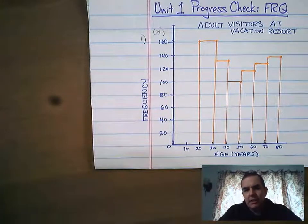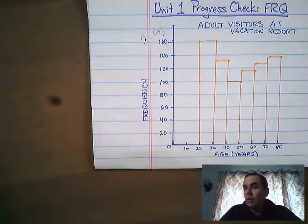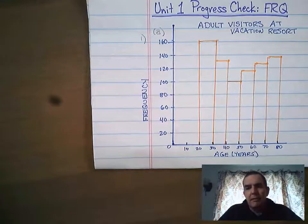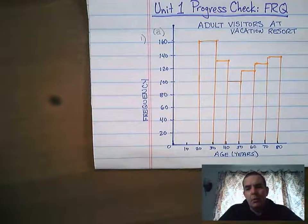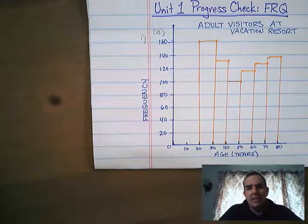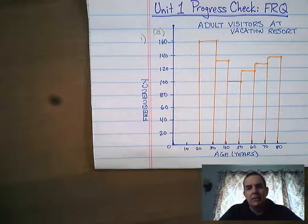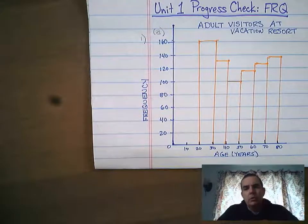This distribution clearly is not that. It is roughly symmetric because it could be folded in half. However, in this case, there are more results at the extremes — at the highs at the 20 to 30 and the 70 to 80 — than there is at the middle.